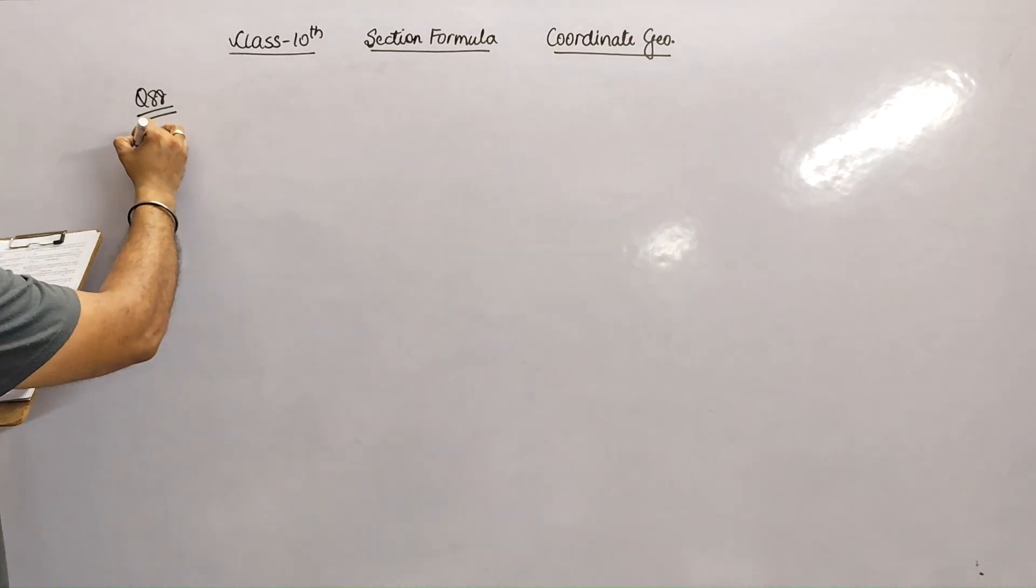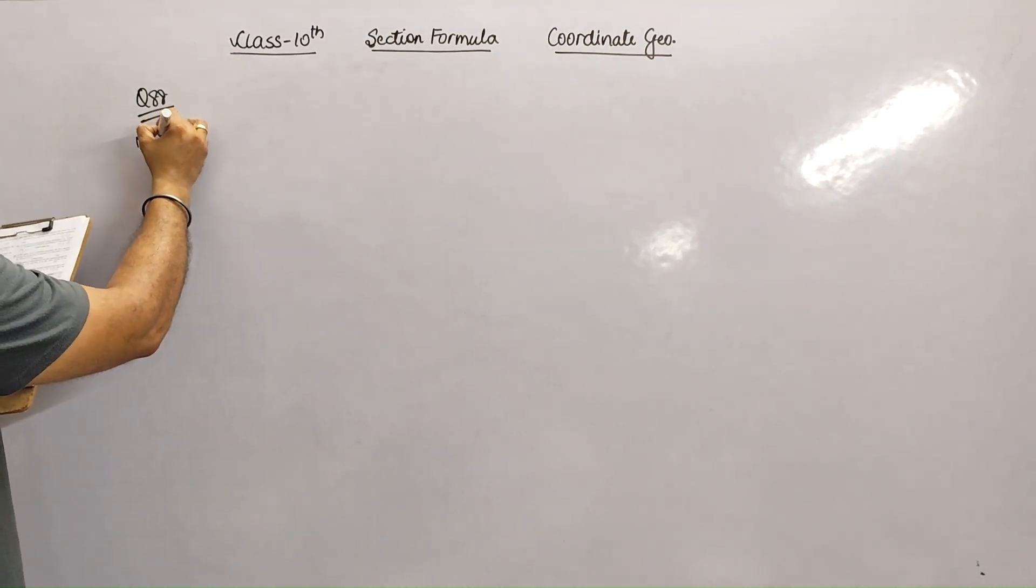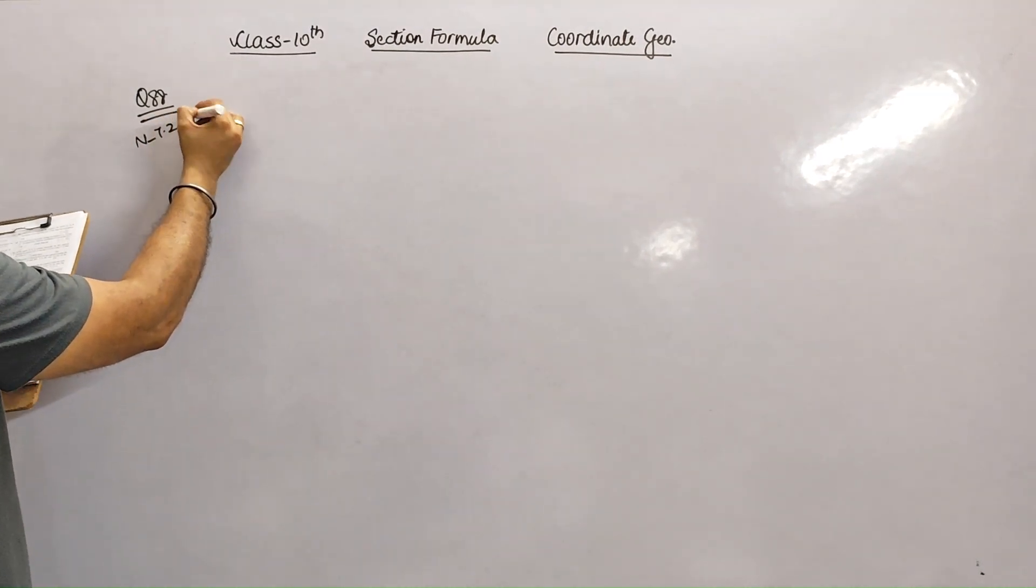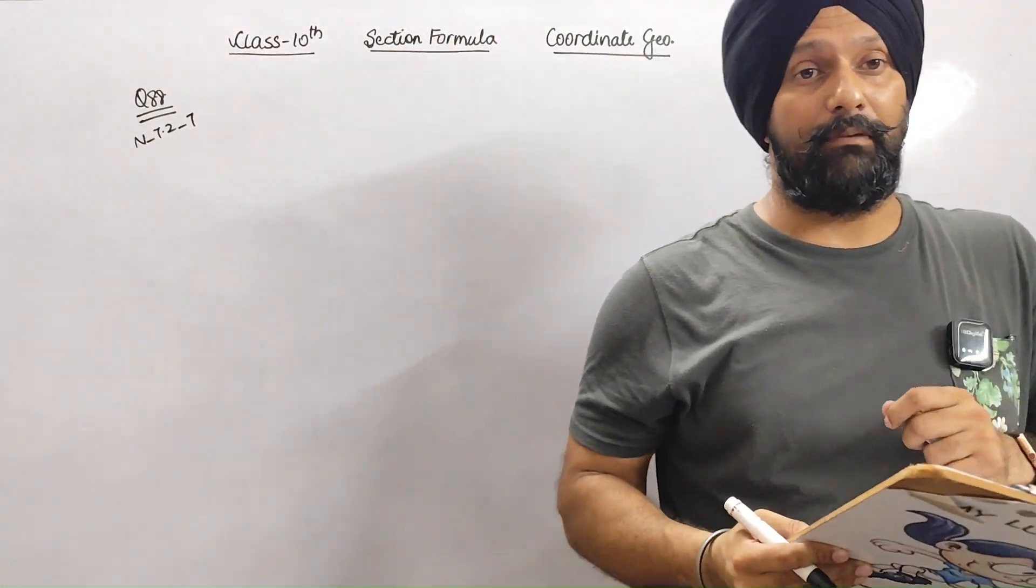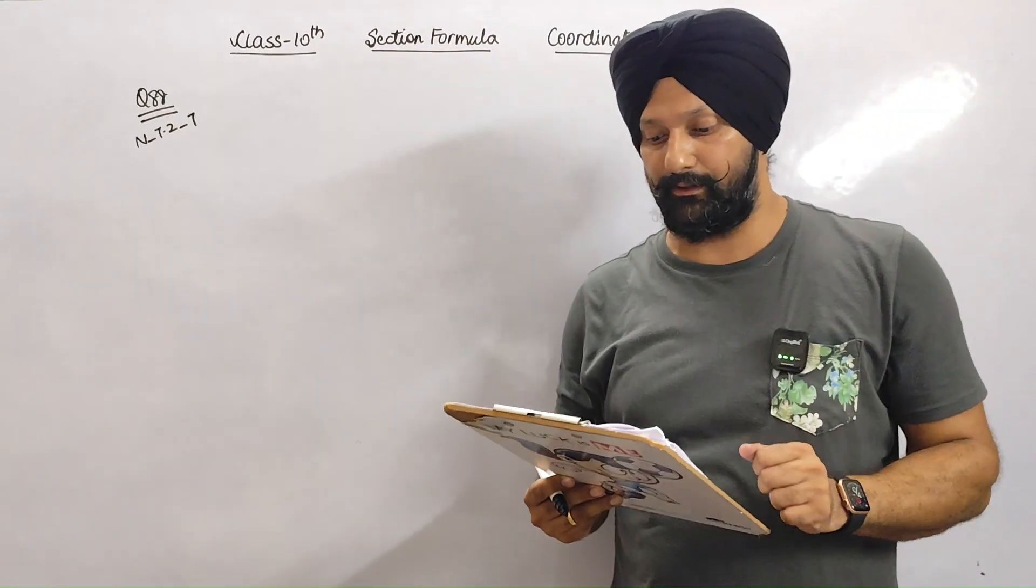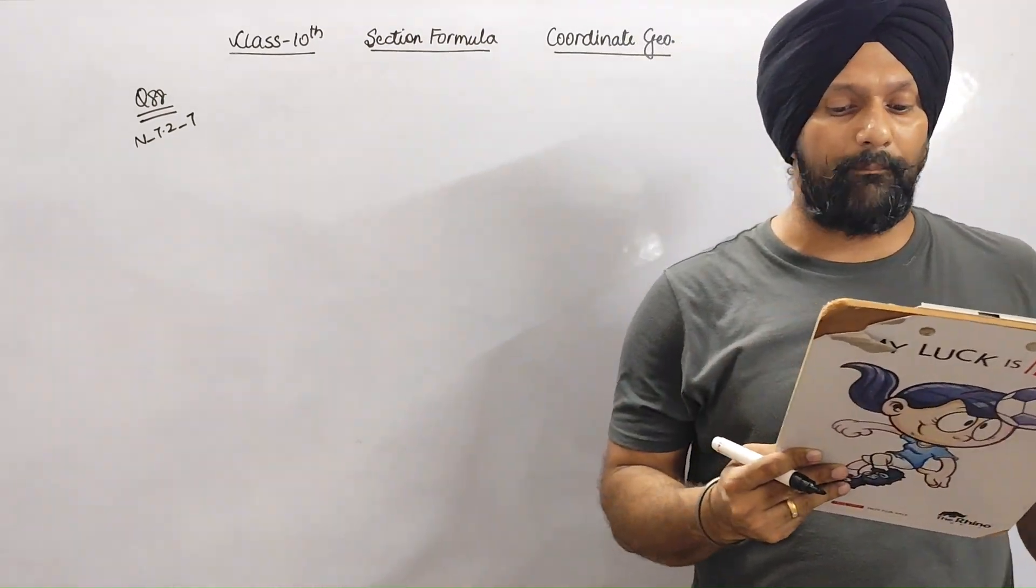First question number 88, NCERT exercise 7.2, question number 7. It's a very basic question but it will help you in understanding the concept. Find the coordinates of a point A.